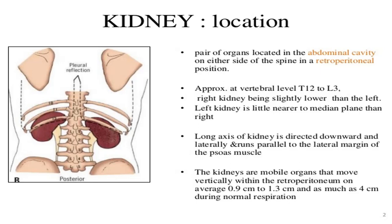The kidney has two axes. The long axis of the kidney is directed downward and laterally, parallel to the lateral margin of the psoas muscle, which is present on the posterior side of the abdomen. The kidney is a mobile organ and moves vertically within the retroperitoneal space on average 0.9 cm to 1.3 cm, and as much as 4 cm during normal respiration. This is the size range of kidney movement.